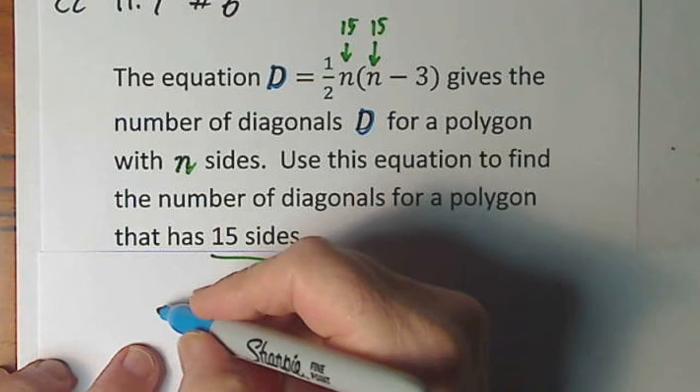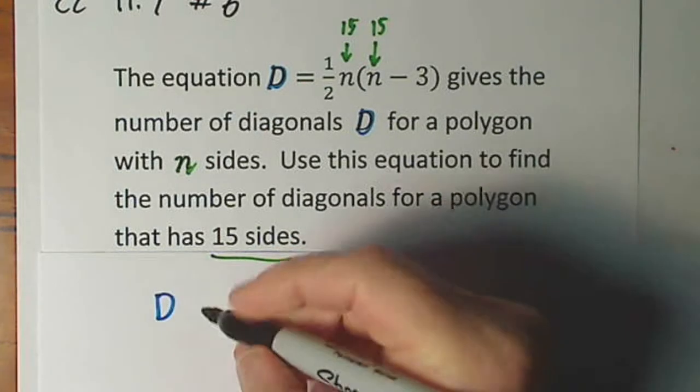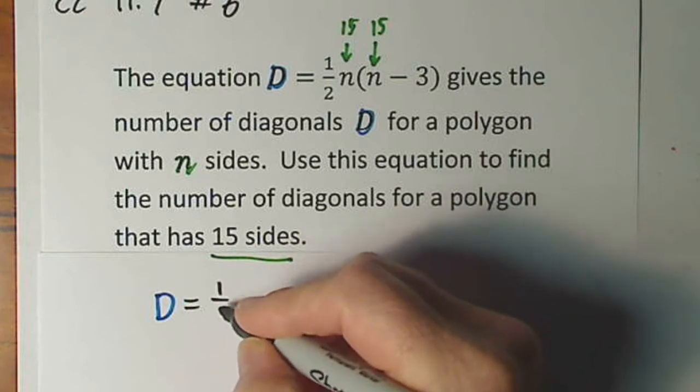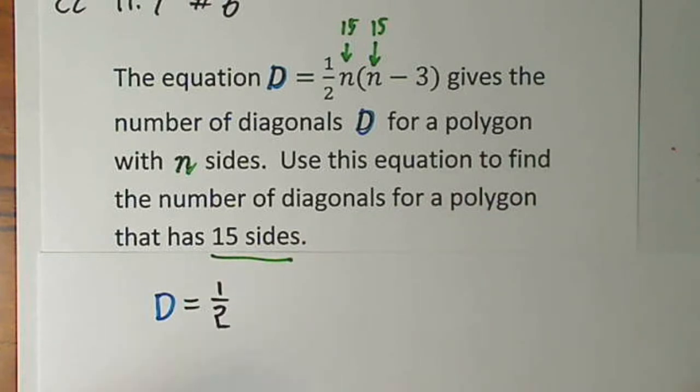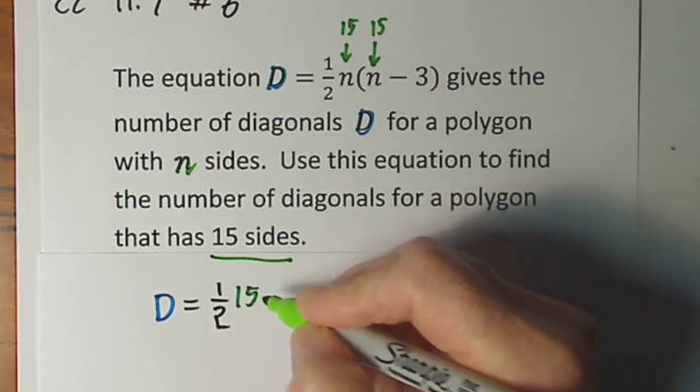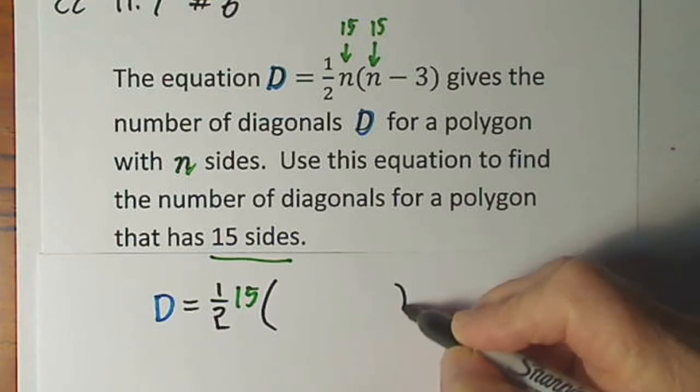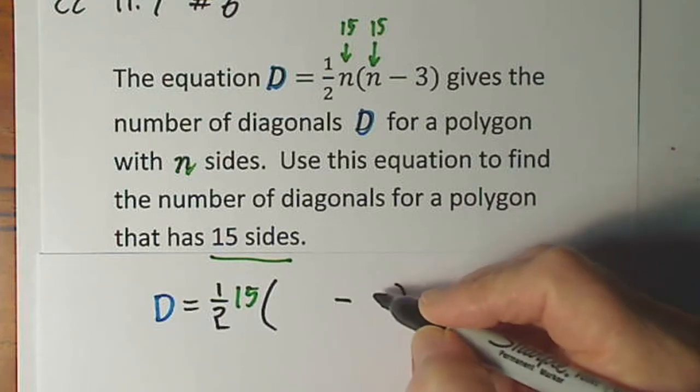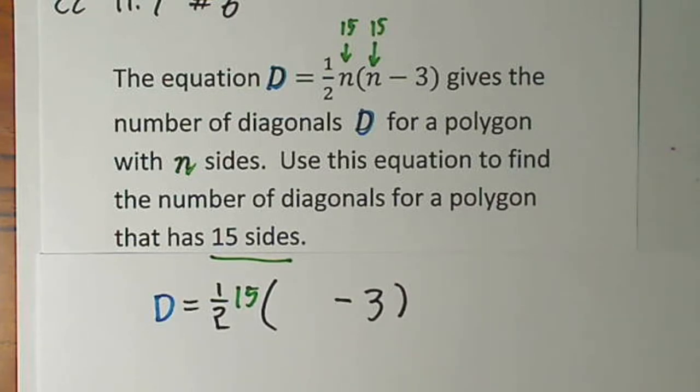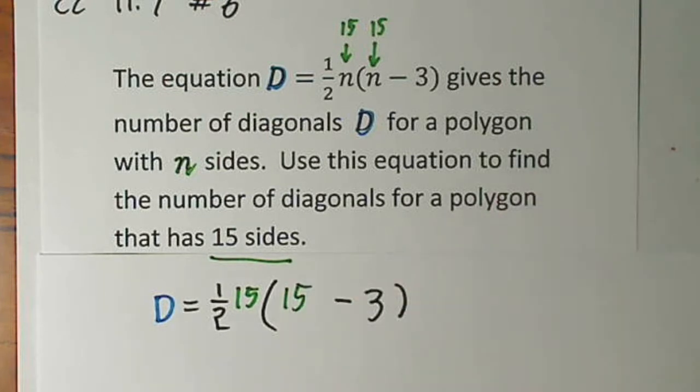Our original formula: D equals one-half, plug in a 15 right here, and you have your parentheses, very important, minus 3, and the other 15 is sitting right here. Okay, there's a lot going on here, so we're going to clean up this side of the equation.